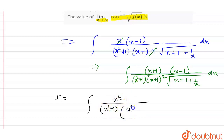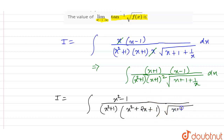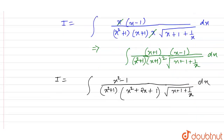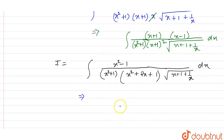And we have x squared plus 2x plus 1 here. And we have x plus 1 plus 1 by x, with respect to dx. So taking x squared common from the denominator.